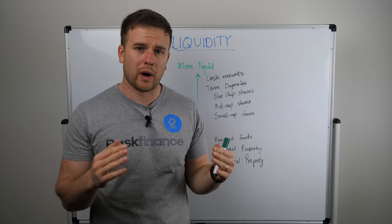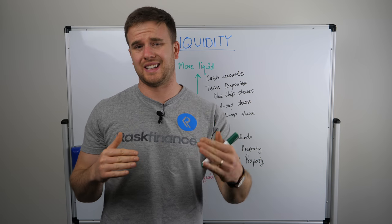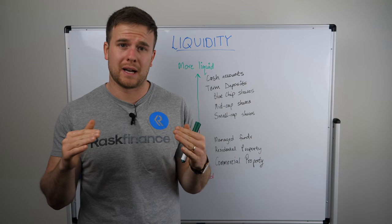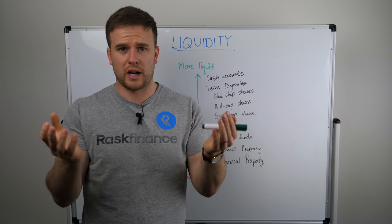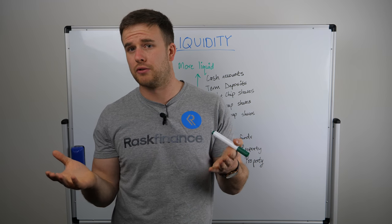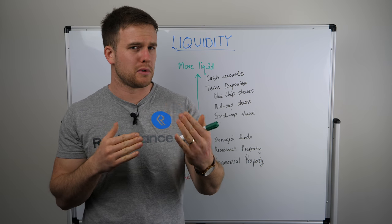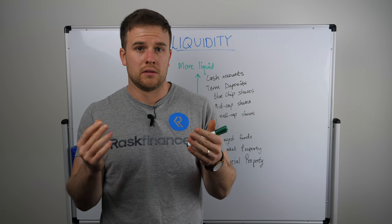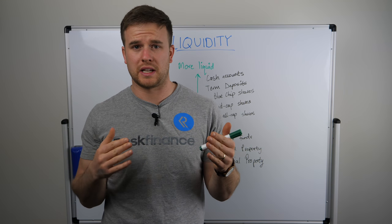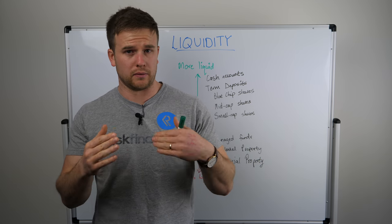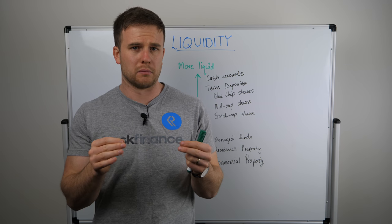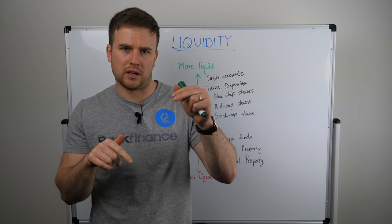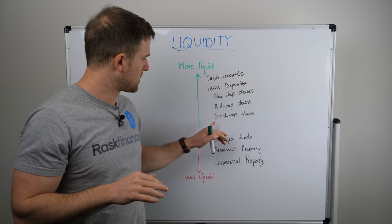Small cap shares are the part of the market where it starts to get a little bit tricky. So if you have a company in Australia with a market capitalisation — meaning the entire company is worth less than say a hundred or two hundred million dollars — you might find that there aren't too many buyers and sellers. If you hold shares it may take you a day, maybe two, maybe a week to sell those shares. Conversely, if you are trying to buy shares you may not get the full amount of your order at the price that you want, so you have to be a little bit calculated in how you set your buy and sell orders when dealing with small cap shares.